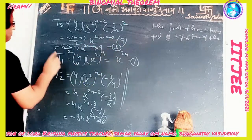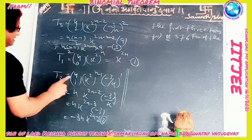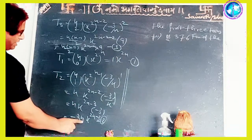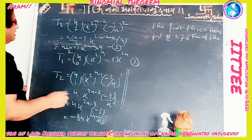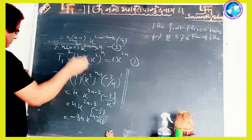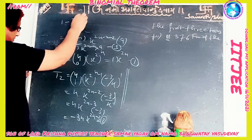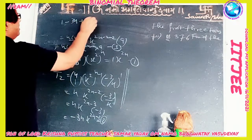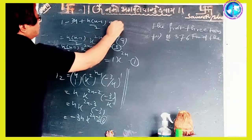Now, the sum of the coefficients: the coefficient of T1 is 1, T2 is -3n, and T3 is 9n(n-1)/2. The sum is given as 376, so: 1 - 3n + [n(n-1)/2] · 9 = 376.